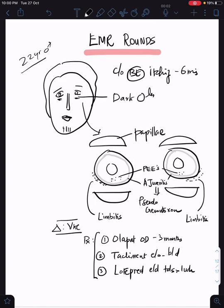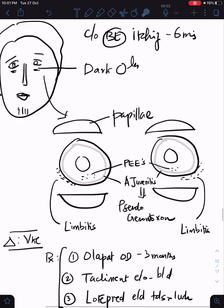On examination, there were small papillae noted on the upper tarsal conjunctiva, nothing like a cobblestone but just small micro-papillae, and multiple PEEs were seen. There was a very interesting finding: a white ring which was inside the cornea with a clear zone between the limbus and that white ring.